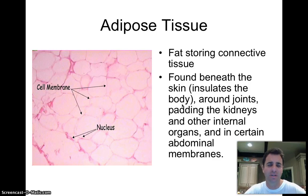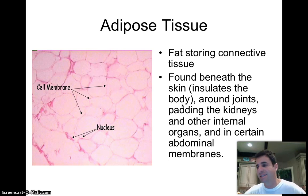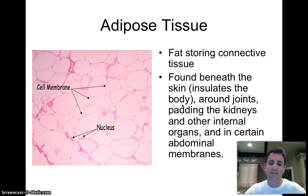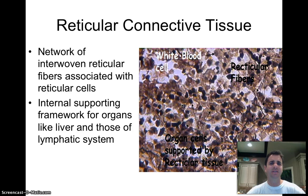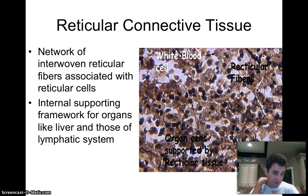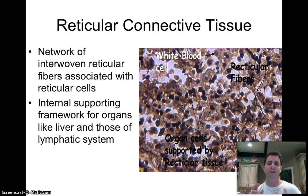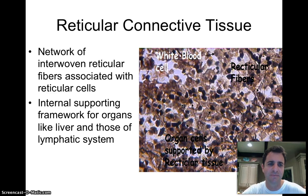Adipose tissue also insulates the body — the more fat you carry, the more warmth you have. Interestingly, colder areas of the United States have a higher percentage of body fat, whether because insulation helps deal with temperature or because people exercise outdoors less during the year — that's up for debate. Reticular connective tissue is also an interwoven interconnected meshwork, and it forms a supportive framework for internal organs, mainly the liver, as well as lymphatic organs like lymph nodes and the spleen.